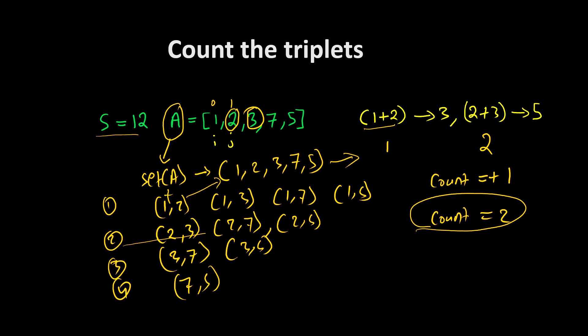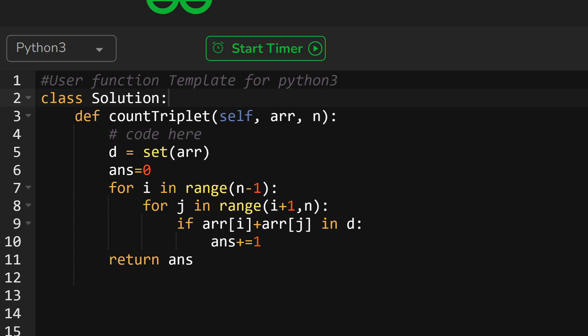Now let's go into the coding section. After seeing the code, it will be very much clear. Now we are inside the coding section. As you can see, we have converted the array into our set form here, and we are taking answer equal to 0. This is for counting how many triplets are there, and we have taken a nested loop.